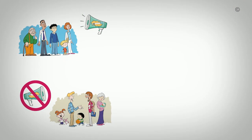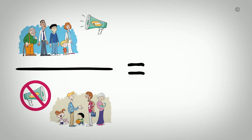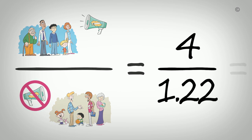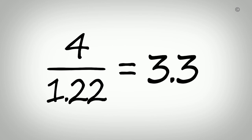Now that we have the odds of getting the flu shot in both groups, we can calculate the ratio between them to find out the effectiveness of the campaign. Odds ratios are calculated by dividing the odds of an event occurring in those exposed to an intervention by the odds of an event occurring among those not exposed to the intervention. In our case, this means dividing the intervention group odds, 4, by the control group odds, 1.22, which gives us an odds ratio of 3.3.